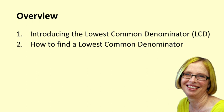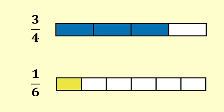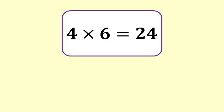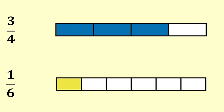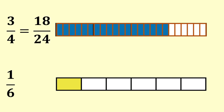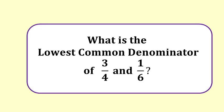But sometimes we wish to find the lowest common denominator — I will show you how with an example. Three fourths, also known as three quarters, plus one sixth. We find a common denominator by multiplying the two denominators: four times six equals twenty-four. Twenty-four is a common denominator of three fourths and one sixth. Three fourths is equivalent to 18 twenty-fourths, and one sixth is equivalent to four twenty-fourths. But is 24 the lowest common denominator?